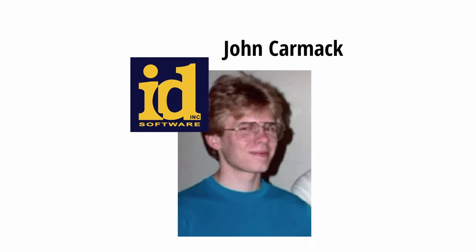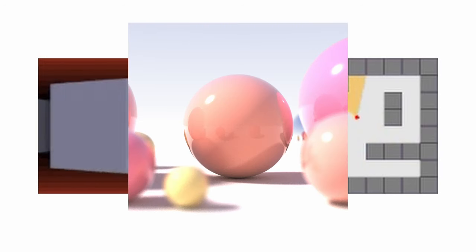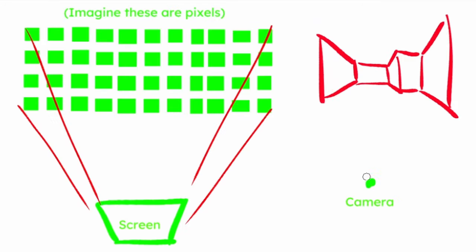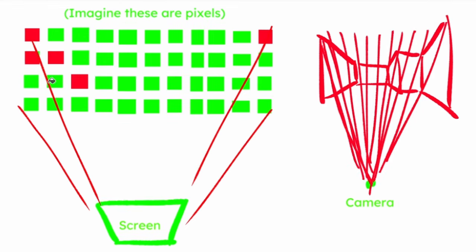The next milestone in the genre was when id Software's programmer John Carmack experimented with a technique of rendering graphics that looked three-dimensional. He used a method called raycasting — not to be confused with raytracing. Raycasting is a technique where the computer uses many lines to scan across the in-game scene to determine what is visible to the camera.